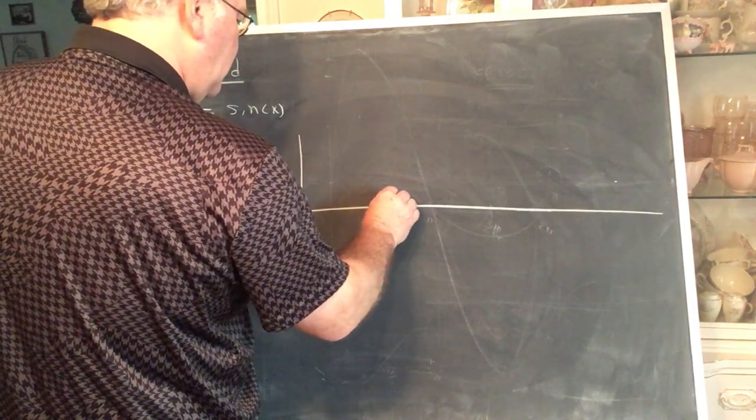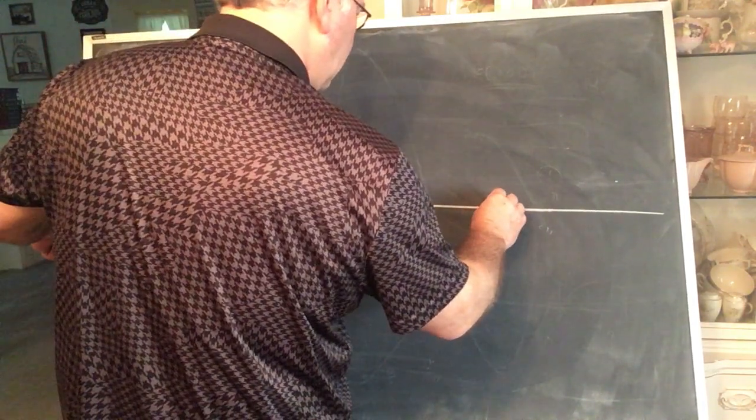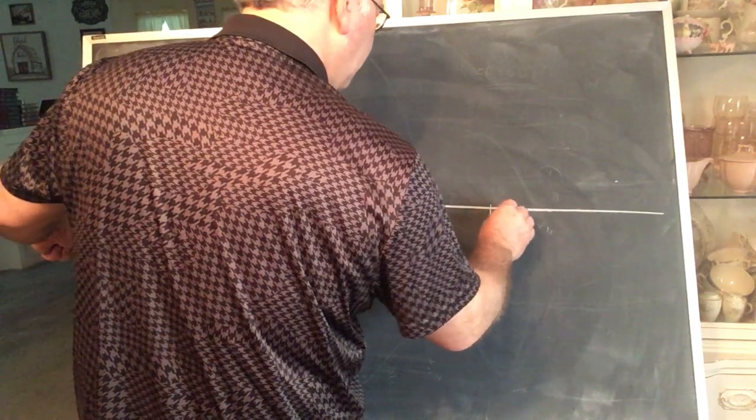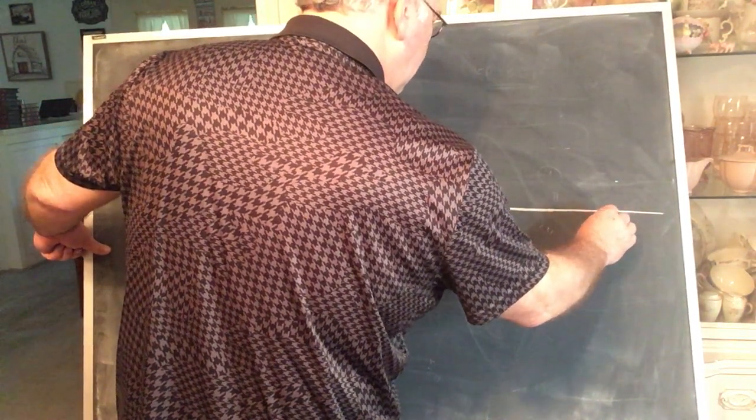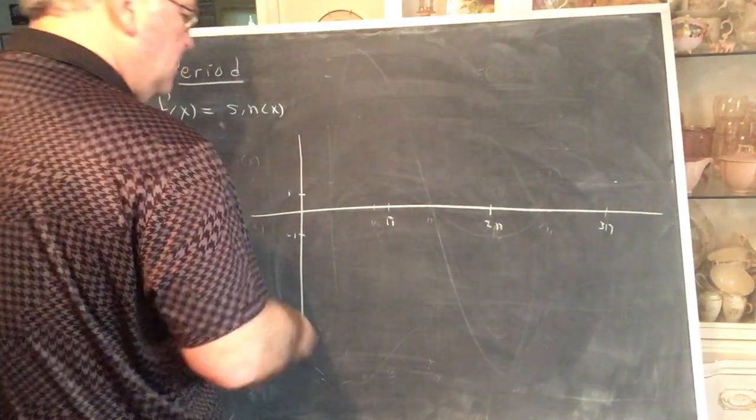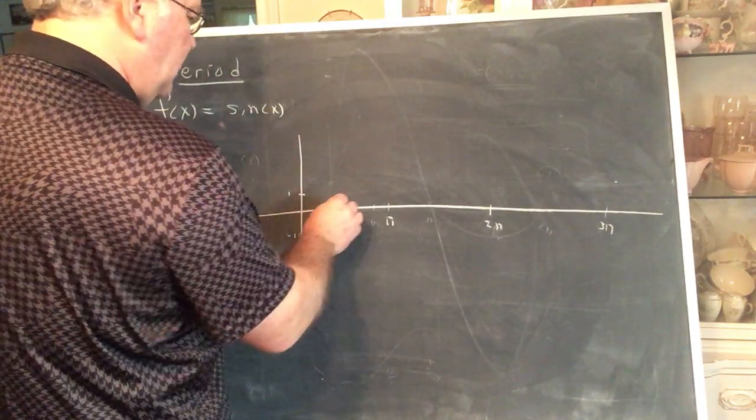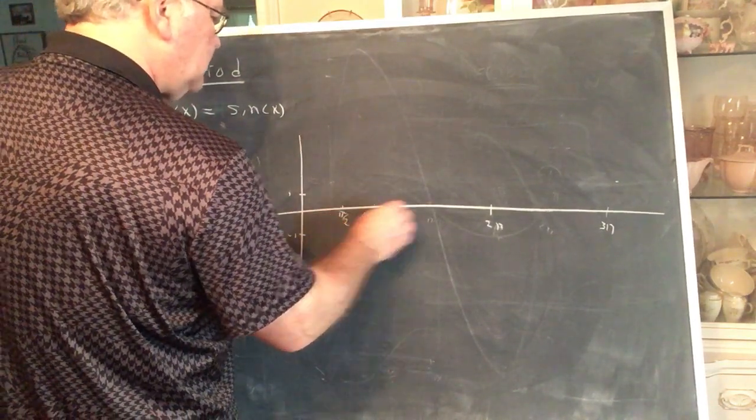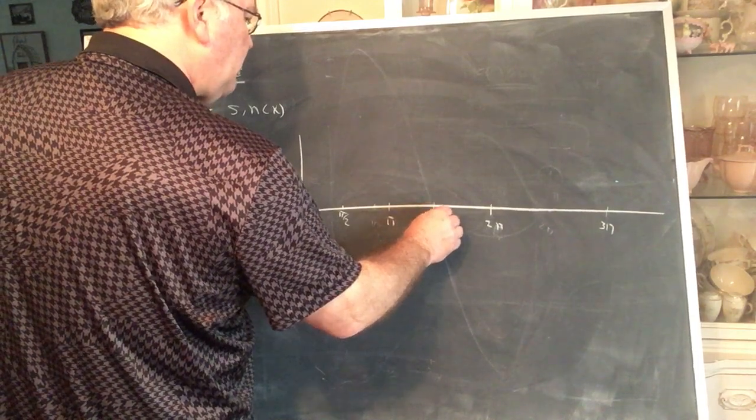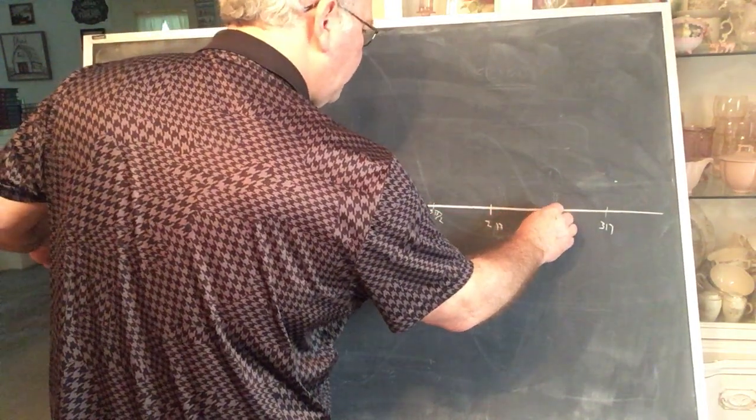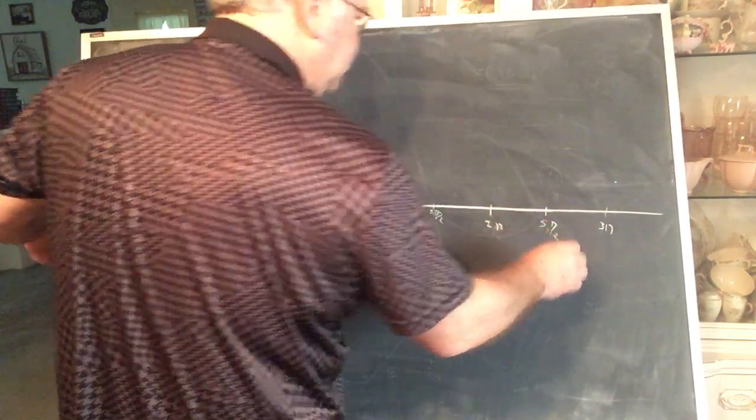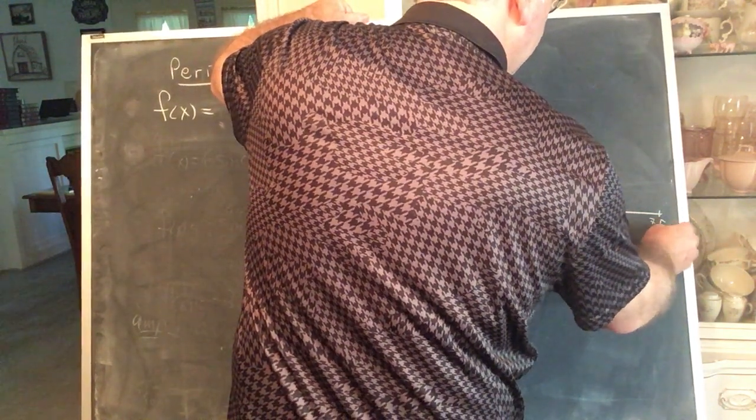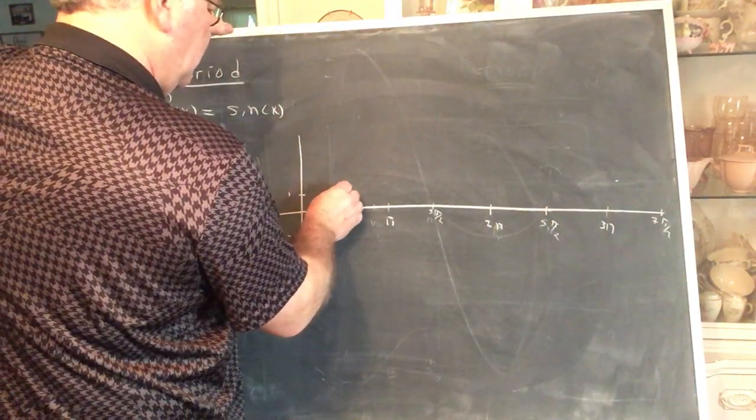So we know the basic graph of the sine curve. So here's 1, negative 1, there's π, there's 2π, there's 3π, should we need it, and sine, here's π over 2, 3π over 2, 5π over 2, 7π over 2, here's the sine curve.